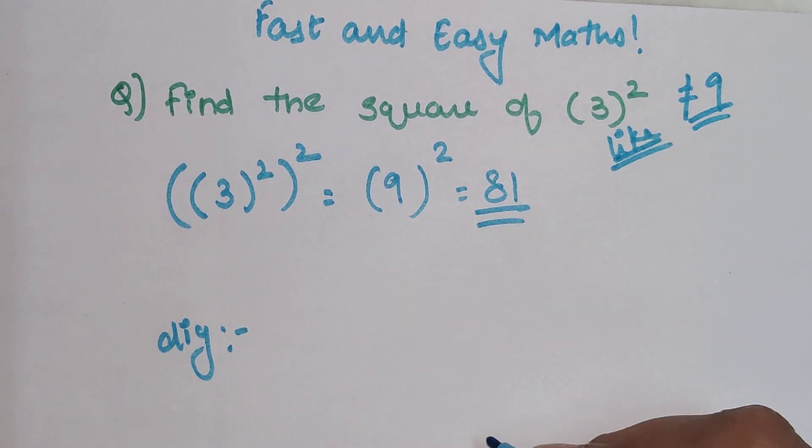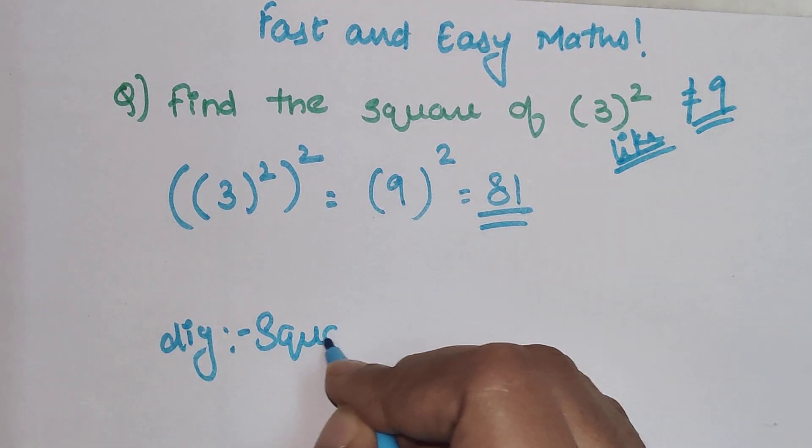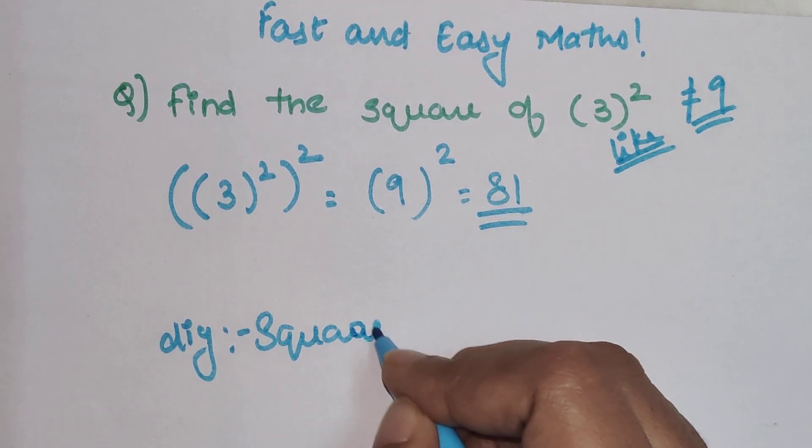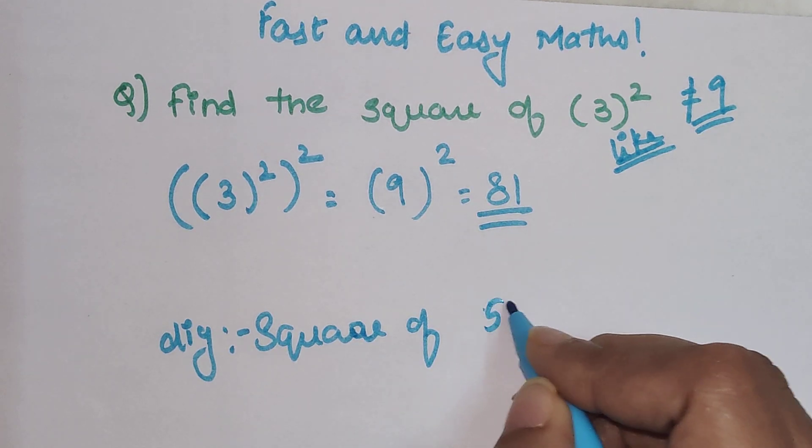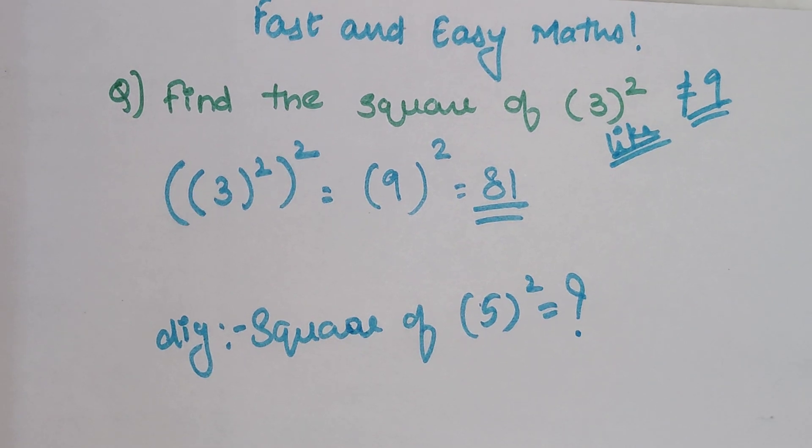A lot of students made this mistake and wrote it as 9. So now tell me: what is the square of 5 squared in the comment section?